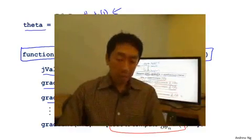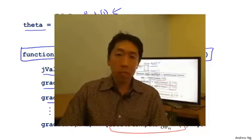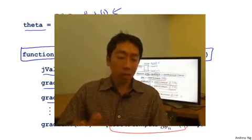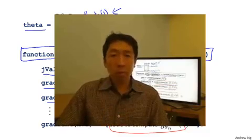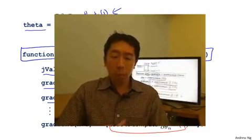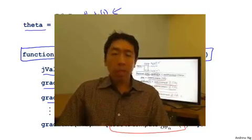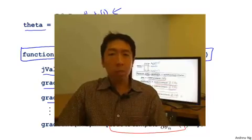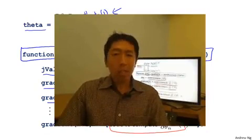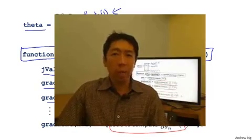So now you know how to use these advanced optimization algorithms. Because you're using a sophisticated optimization library, it makes the code just a little bit more opaque and maybe a little bit harder to debug. But because these algorithms often run much faster than gradient descent, whenever I have a large machine learning problem, I will use these algorithms instead of gradient descent. With these ideas, hopefully you'll be able to get logistic regression and also linear regression to work on much larger problems. That's it for advanced optimization concepts. In the next and final video on logistic regression, I want to tell you how to take the logistic regression algorithm and make it work also on multi-class classification problems.